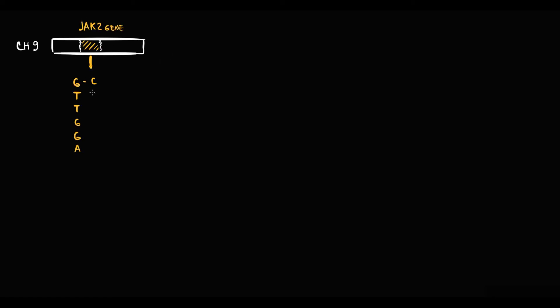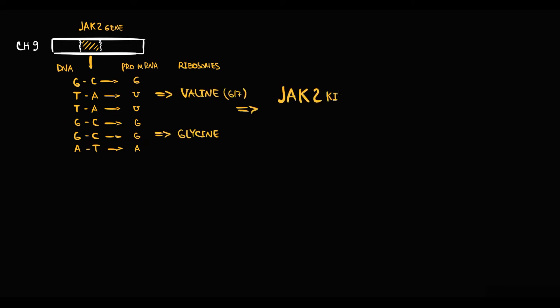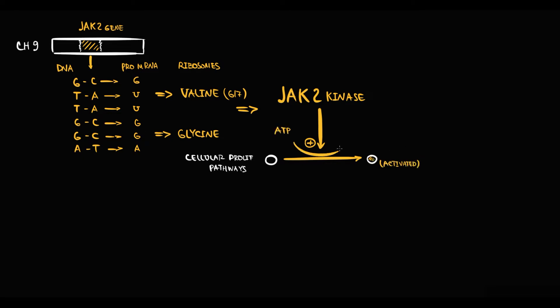Recall that on chromosome 9 is located the JAK2 gene that encodes JAK2 kinase. The function of JAK2 kinase is to activate cellular pathways that are responsible for cellular proliferation, mostly of myeloid cells. And activation of these pathways occurs by phosphorylation.